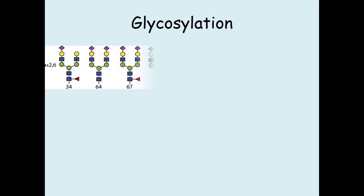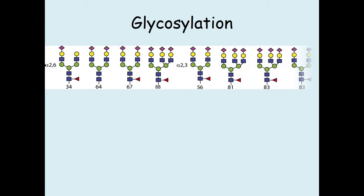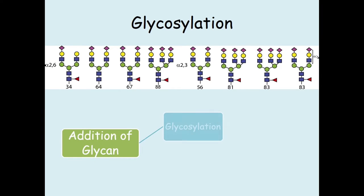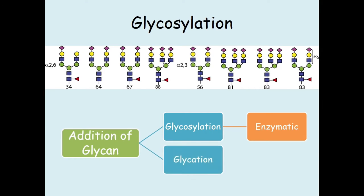Glycosylation process is a covalent attachment of oligosaccharide chain on the protein backbone. It is considered as the most common post-translational modification of protein. There are two different ways in which glycan can be added into amino acid: through enzymatic ways called glycosylation, where this process is done by an enzyme called glycosyl transferase, and the other one by non-enzymatic ways in the process called glycation.